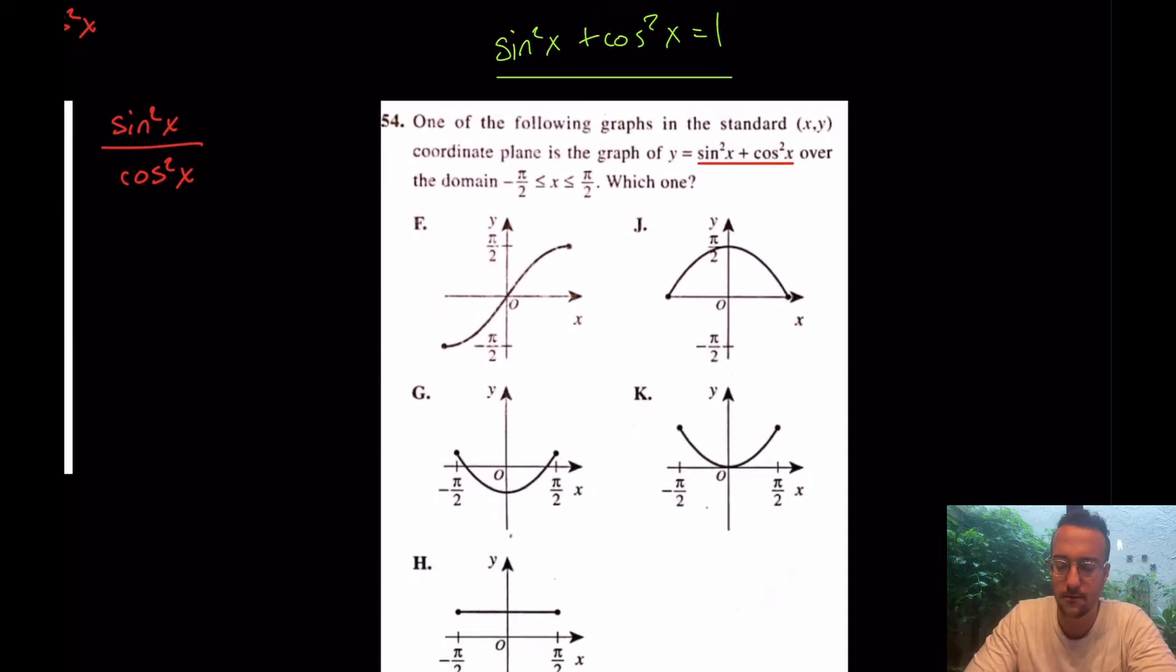Sine squared plus cosine squared equals one. Okay, well, then what? Well, then you can understand that, well, wait a second. One? Really, y equals one? What is that?